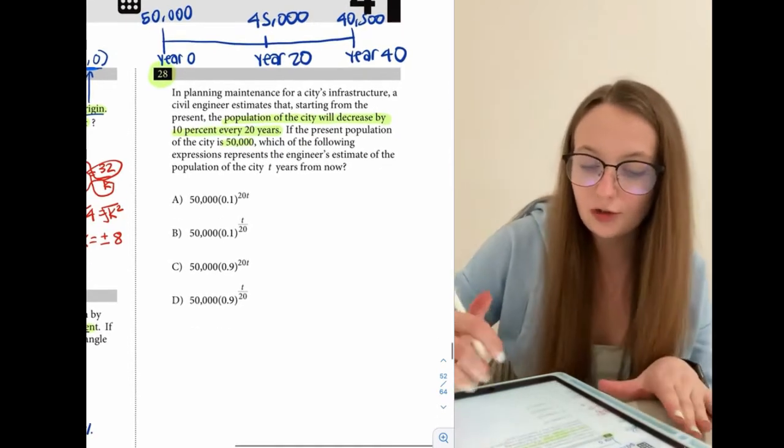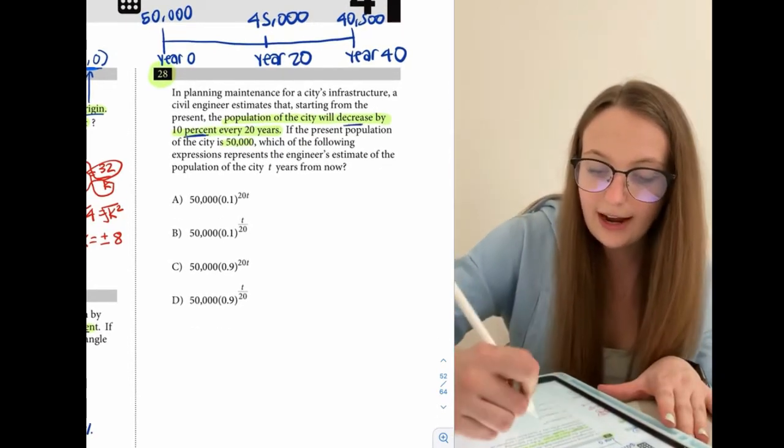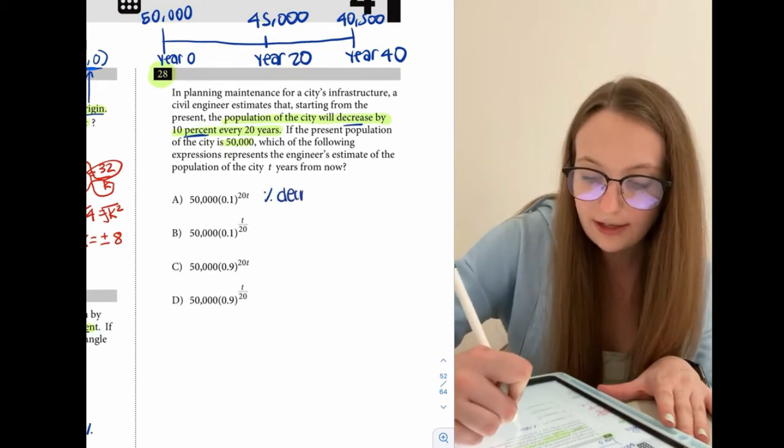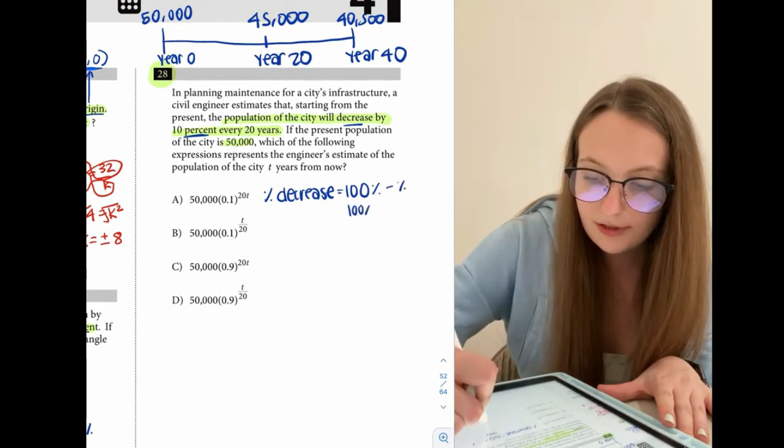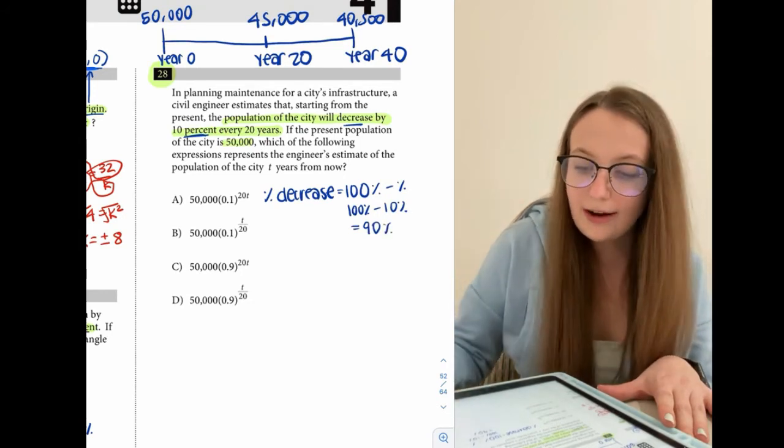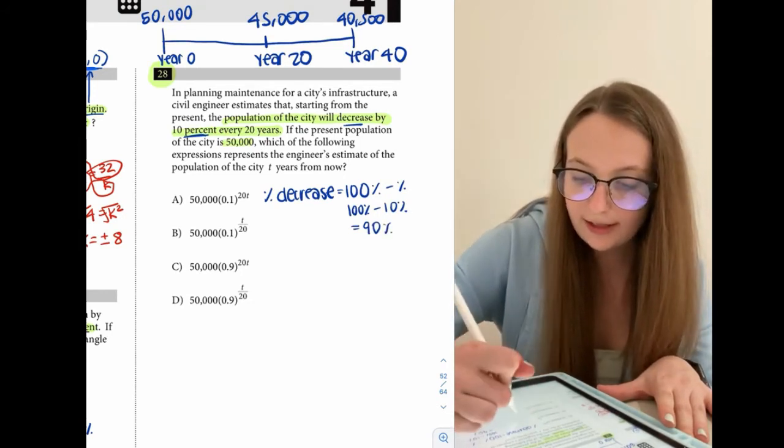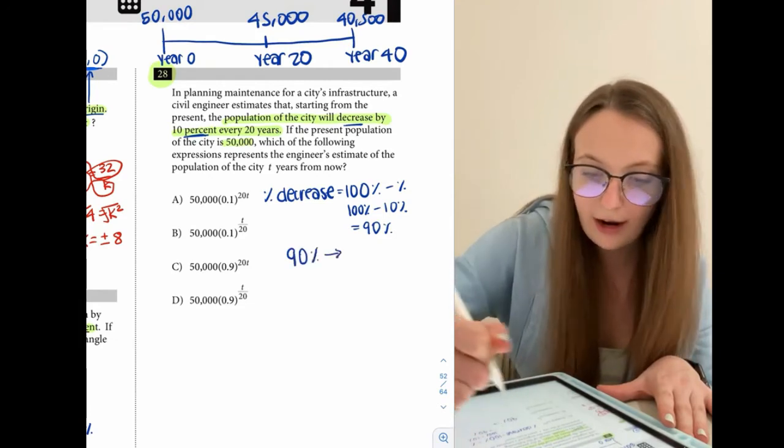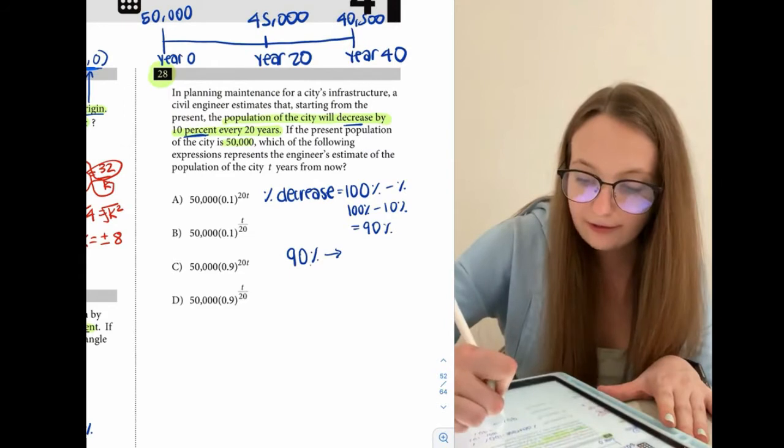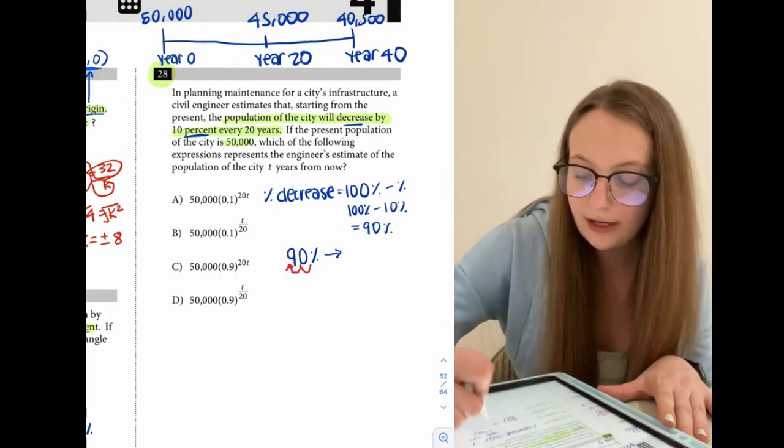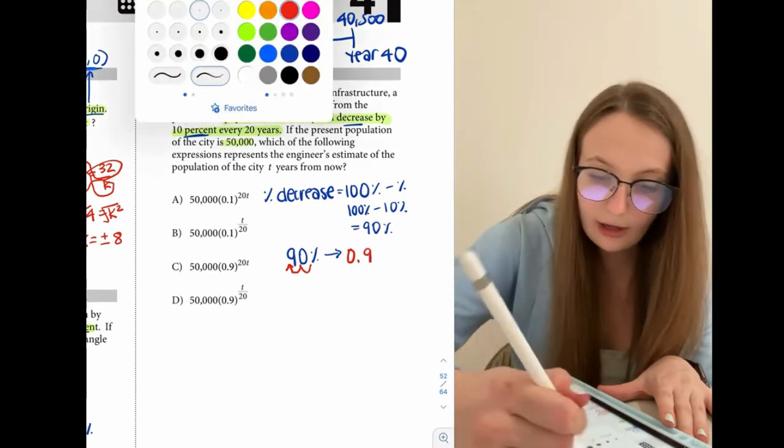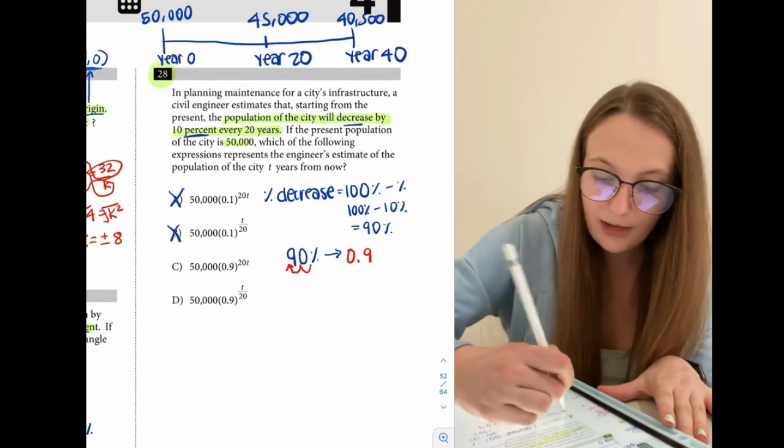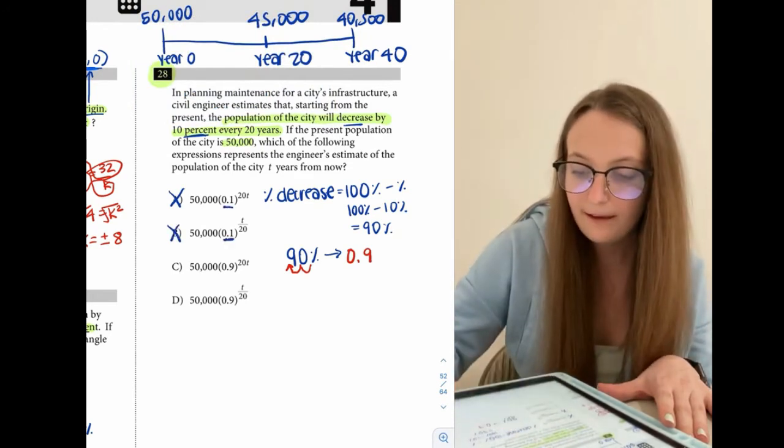So let's first just remind ourselves a decrease of 10%. As we said with the last problem, a percent decrease can be found by subtracting the percent from a hundred percent. So a hundred percent minus 10% gives us 90%. So 90%, we don't see that in any of these choices, but 90% in order to rewrite that in its decimal form, all that we have to do is take the decimal point and move it over two places to the left. So we get 0.9. So automatically we can go ahead and knock out choices A and B because those have 0.1, not 0.9.